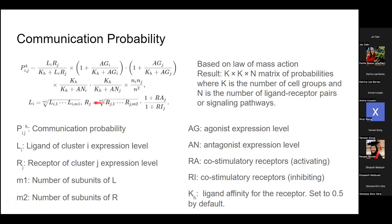Similarly, R_J is the receptor expression level of cluster J — again, if there are subunits, they take the geometric mean. They also add information about R_A and R_I — co-stimulatory receptors (activating) or co-inhibitory receptors — that may be present in J. These are taken into account in the equation.